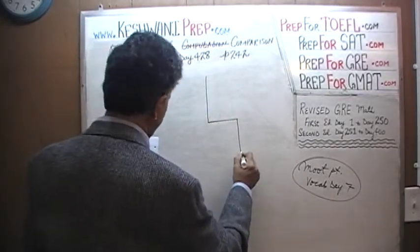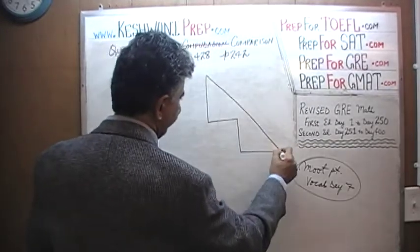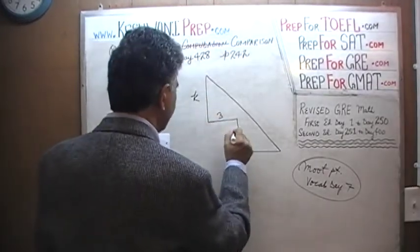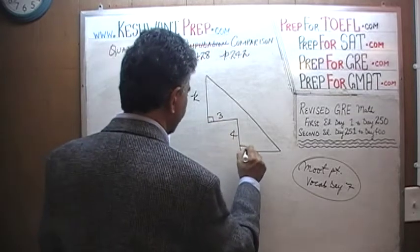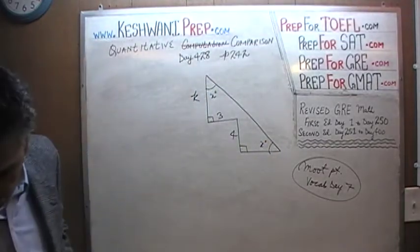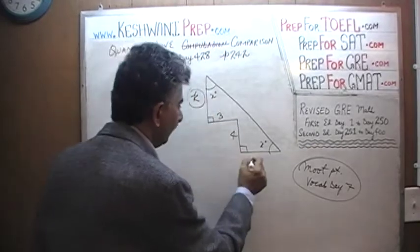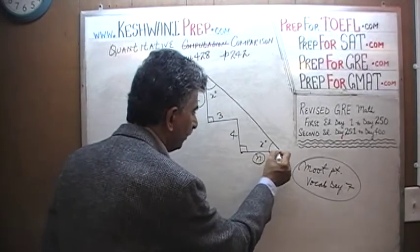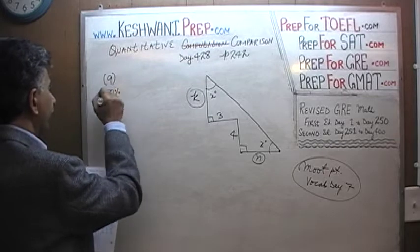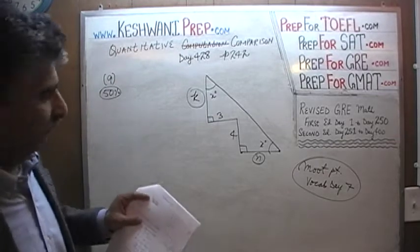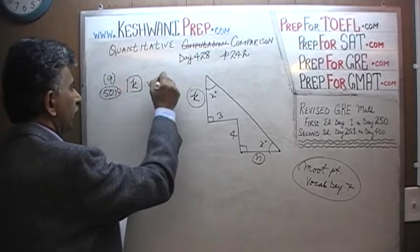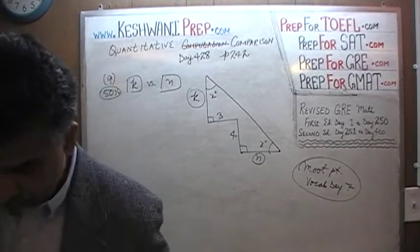Here is the picture that is given to us. We are told that this side is K, this side is 3, this is 4, this is a right angle, this is a right angle. We are told that this angle is X degrees and this angle is also X degrees. This quantity is K and this quantity is N — from here to here we are told is N. They want us to compare K versus N. Pause the video, do the problem yourself.